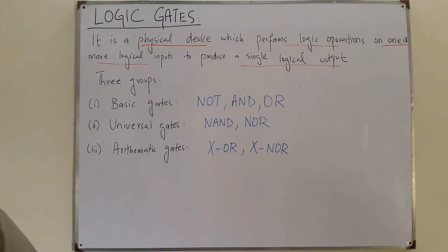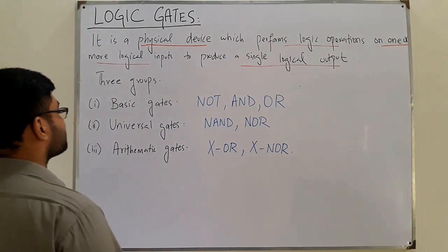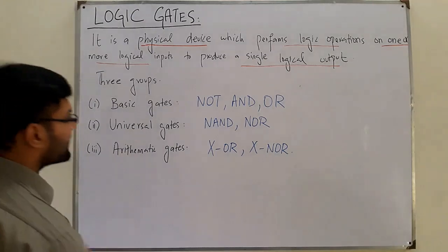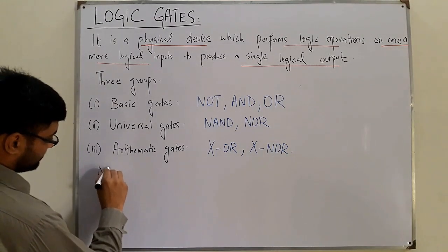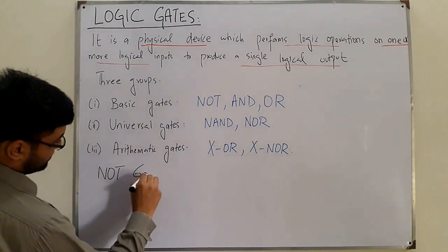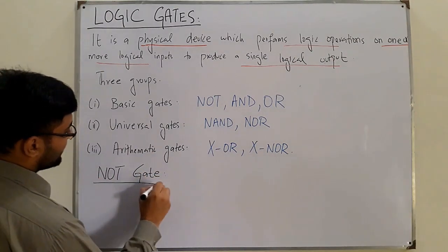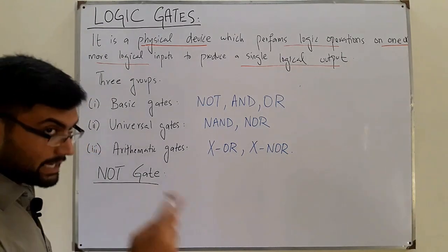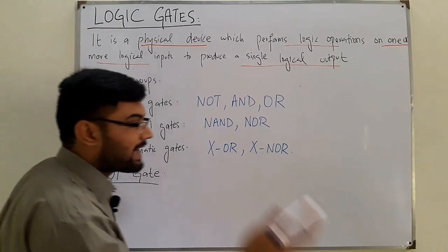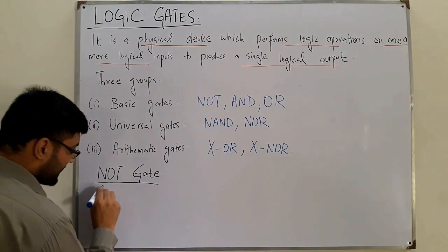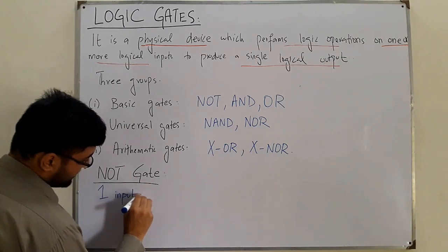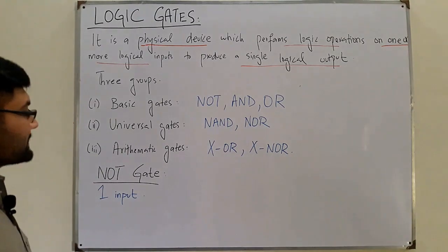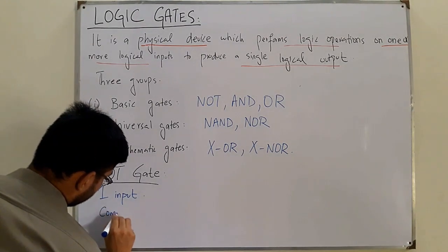We start with the NOT gate — the simplest one. The NOT gate is a single-input gate with one input and one output. What does this gate do? It complements the input.